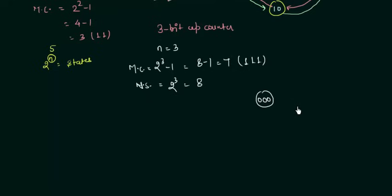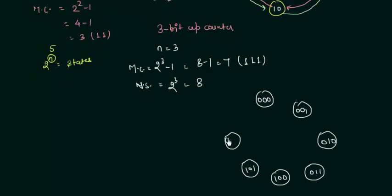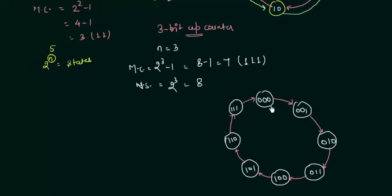So we have 8 states: 0 0 0, 0 0 1, 0 1 0, 0 1 1, 1 0 0, 1 0 1, 1 1 0, and 1 1 1. As it is an up counter we start from 0 0 0 and go to 0 0 1, and in the same way you complete your state diagram by showing the transitions. The state diagram of a counter is not a very tough thing to do, but you must remember these steps so you don't make mistakes in exams, as state diagrams are very often used in competitive exams.